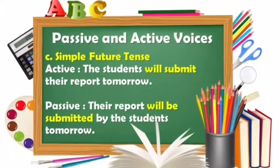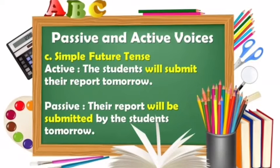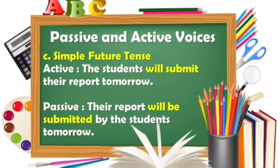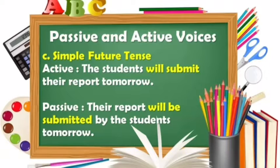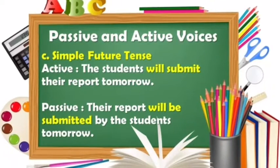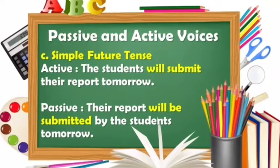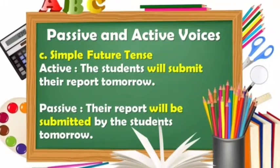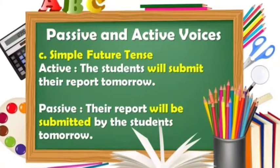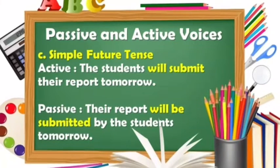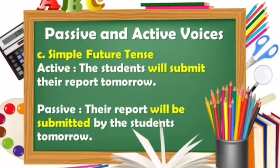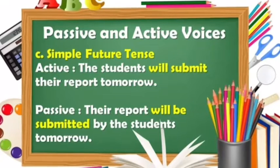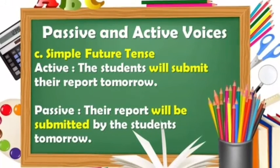Now, let us have an example in simple future tense. In active voice: 'The students will submit their report tomorrow.' The students is the subject, will submit is the action, and their report is the object. If we transform it into passive voice: 'Their report will be submitted by the students tomorrow.' Their report is the object, will be submitted is the action, and the students is the subject introduced by the preposition 'by.'